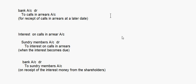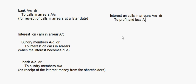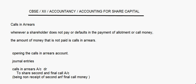Finally, the interest on calls in arrears is transferred to the profit and loss account. So you write: interest on calls in arrears account debit, to profit and loss account. Those are the journal entries that will be made for calls in arrears. Let's look at this once again.